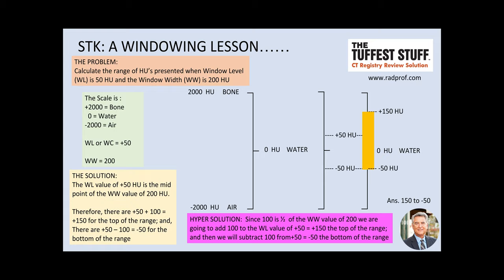The range for water is actually plus four to minus four. And then down at the bottom, we have minus 2,000 Hounsfield units representing those structures like air that are easy to penetrate.